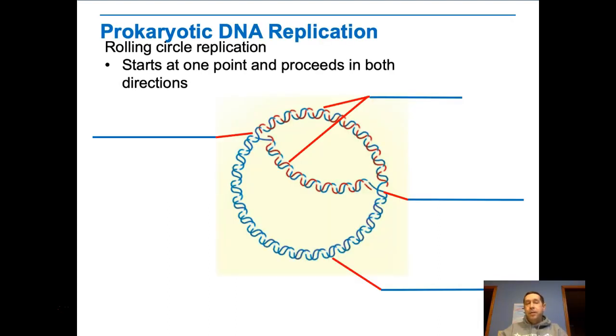In prokaryotes, because they have that one circular chromosome, they use something called rolling circle replication. The DNA molecule opens at one point, there's one origin of replication, and then the enzymes proceed in both directions around the circle until they get to the other side. At that point, you have two copies of the DNA.